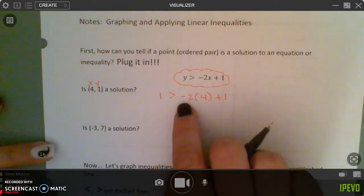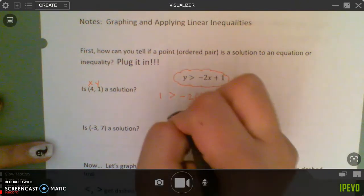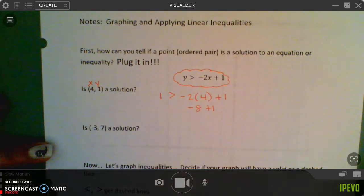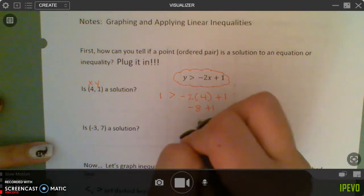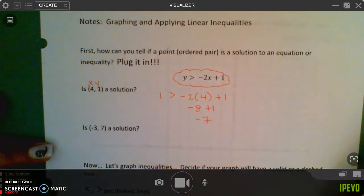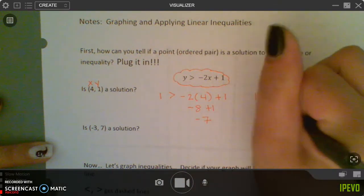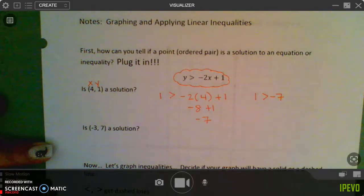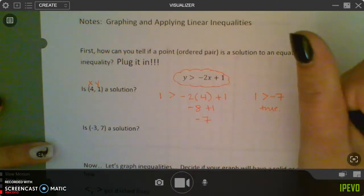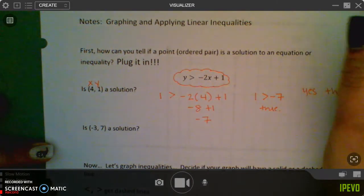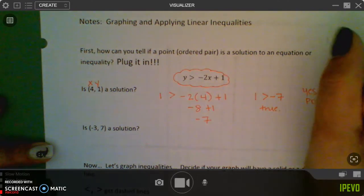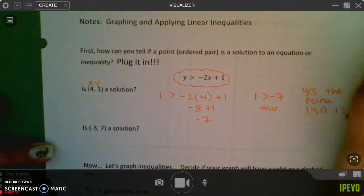So next we have to actually do that with the math. So negative 2 times 4 is negative 8 plus 1. So negative 8 plus 1 is negative 7. So we are looking at, is 1 greater than negative 7? Well, yes, that's true. So because that's a true statement, yes, the point (4, 1) is a solution.